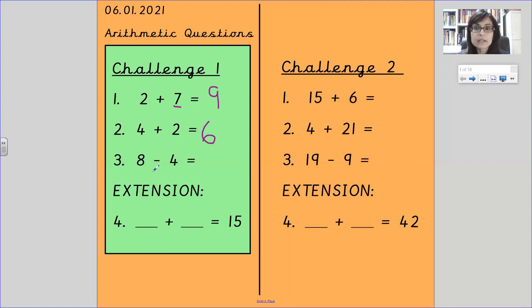Number 3 is a subtraction. 8 take away 4. So 8 in your head and count back 4: 8, 7, 6, 5, 4. So let's try again. With your extension you can have, which we said earlier, 10 plus 5.